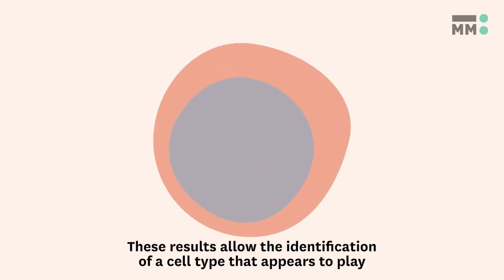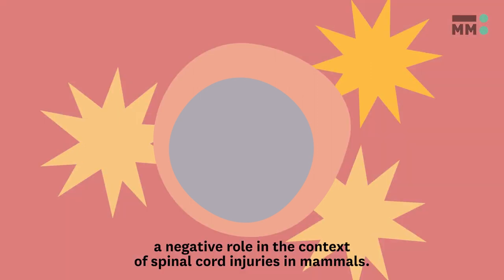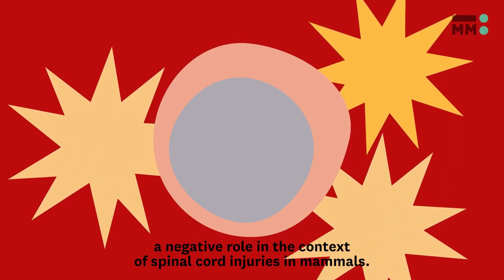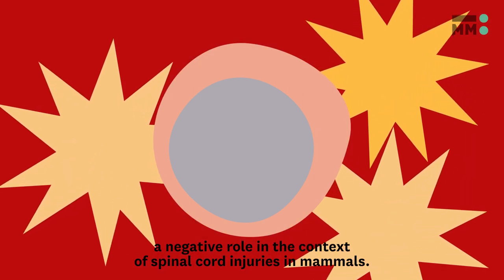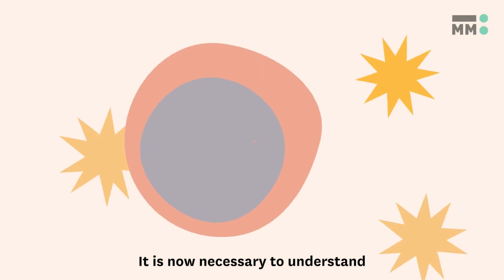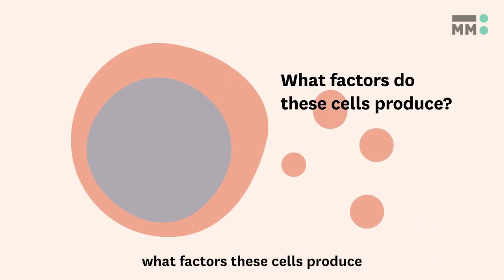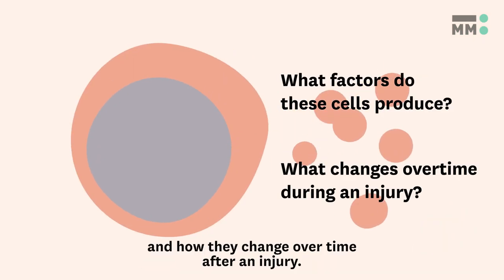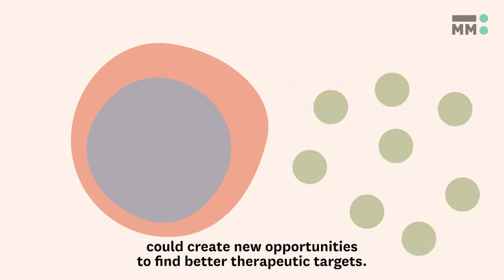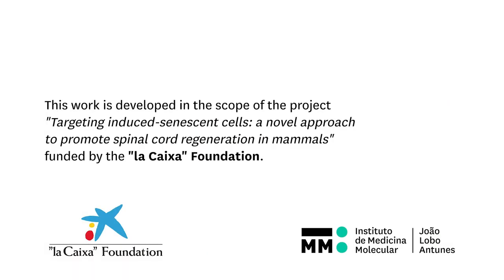These results allow the identification of a cell type that appears to play a negative role in the context of spinal cord injuries in mammals. It is now necessary to understand what factors these cells produce and how they change over time after an injury, as this knowledge could create new opportunities to find better therapeutic targets.